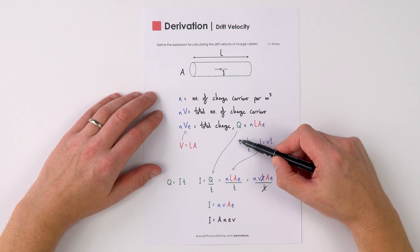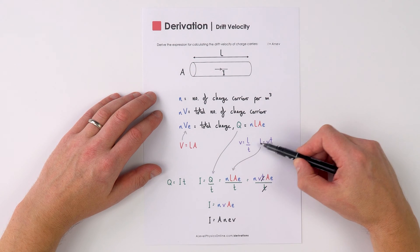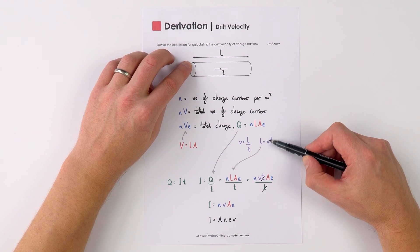We also know that the velocity is equal to the distance travelled divided by the time taken. So the distance travelled L from here to here is going to be equal to V T.